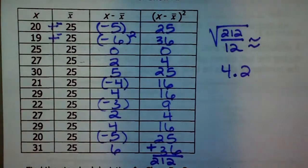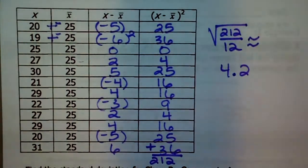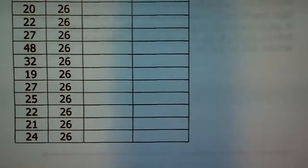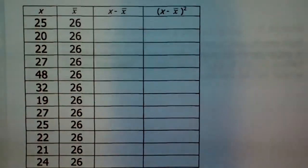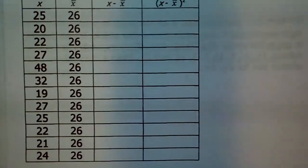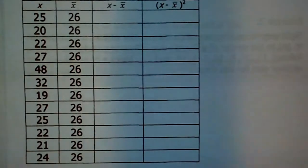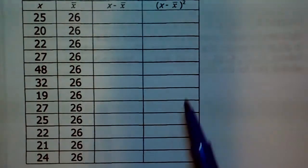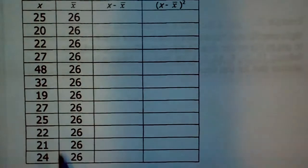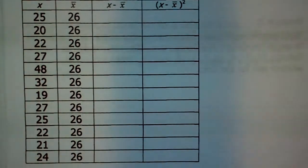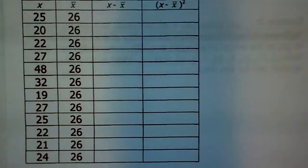Now we're going to compare Show B. I have this all set up — I took all of the ages for Show B and listed them out. Remember our mean for Show B was 26. Your step one: subtract those values. Maybe you want to hit pause and try this one on your own and compare it with mine.